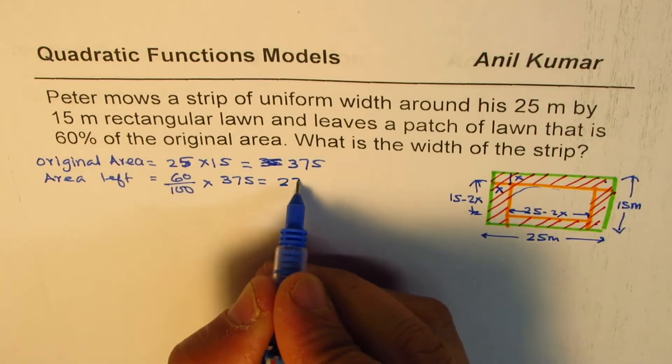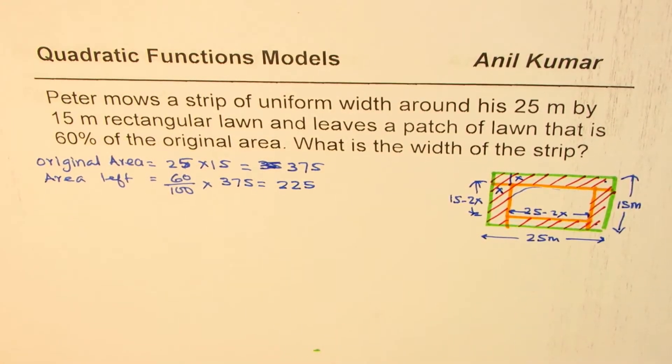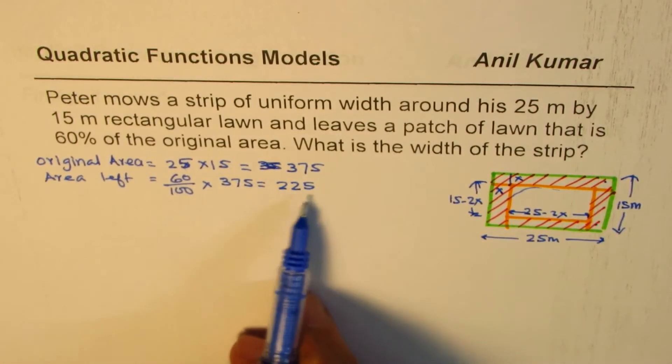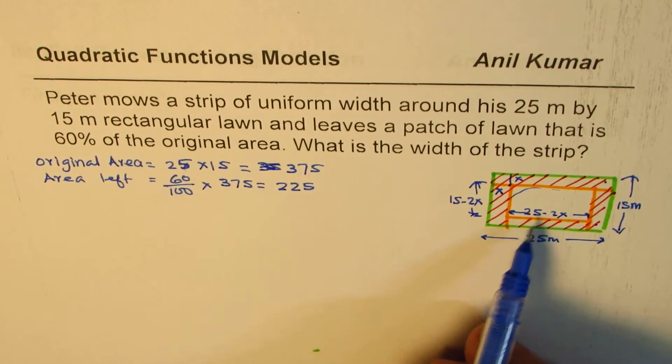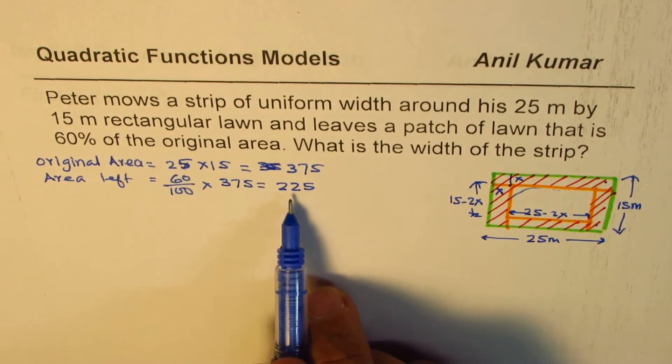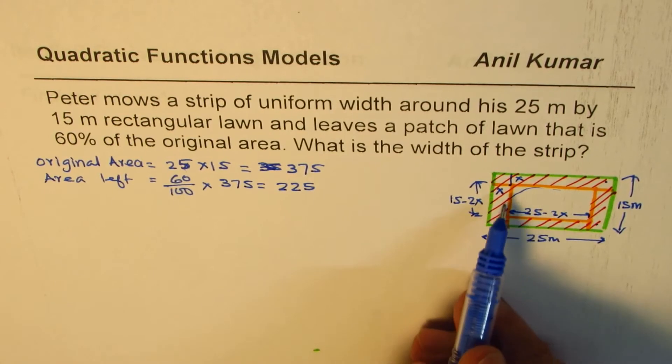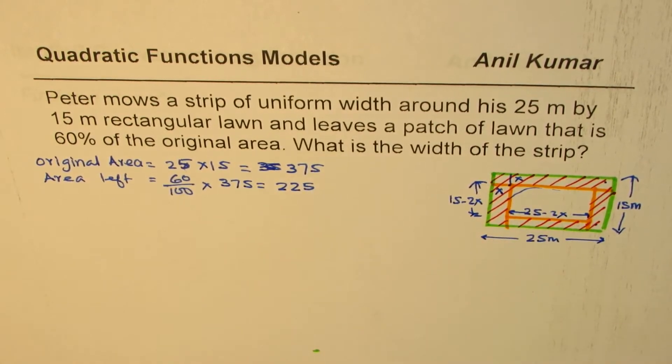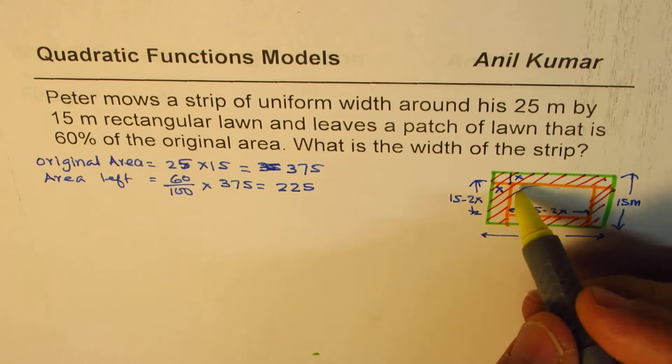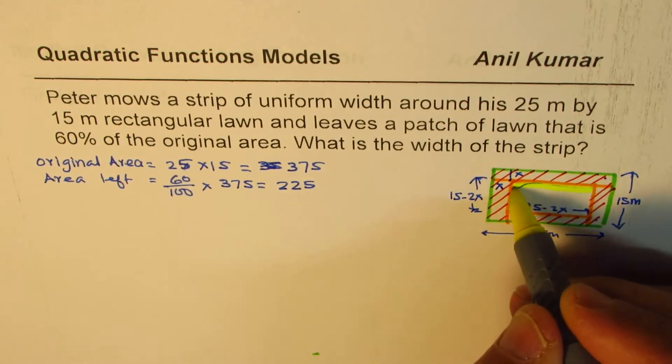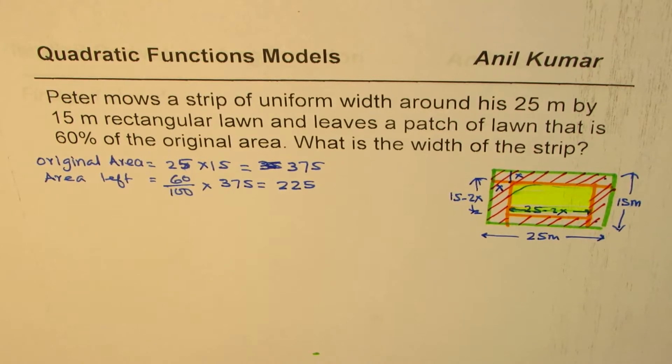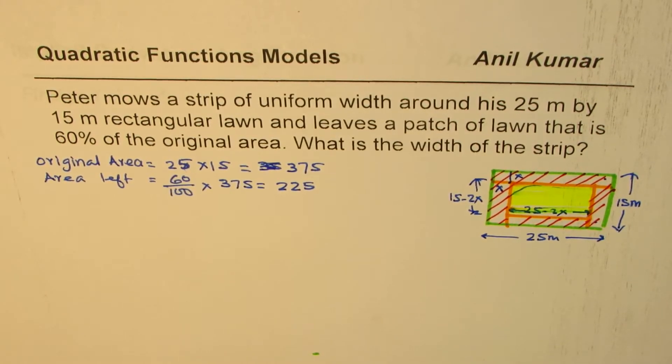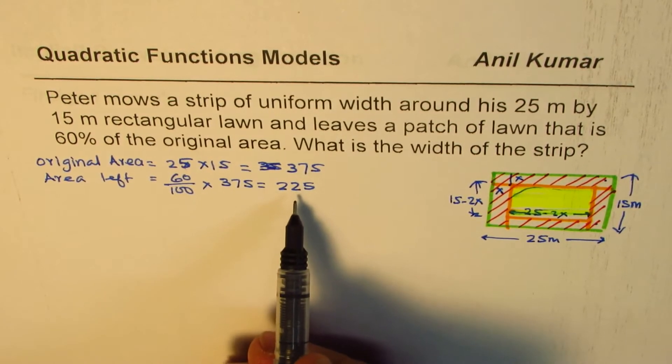So area left is 225. You can always form an equation and equate it to the area left. The equation you're working with is this area - the inside area. So this area is left. We'll just form an equation for this area and equate it to 225.